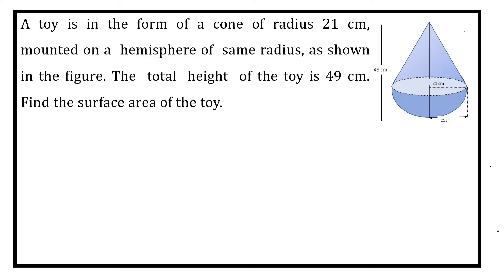The question is: a toy is in the form of a cone. Here is the cone. Its radius is 21 cm, mounted on a hemisphere. Its radius is 21 cm. Total height of the toy is 49 cm. Find the surface area of the toy.